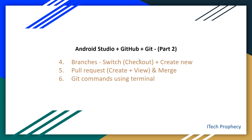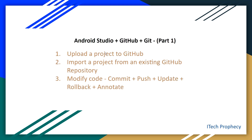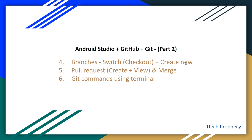Hello guys, I'm back with the second part of the video on how to use Git and GitHub in Android Studio. Before you watch this video, make sure you went through the first part — the link is in the description below. In the first part, we uploaded a project to GitHub, imported a project from an existing GitHub repository, then modified the code and did commit, push, update, rollback, and annotate all directly from Android Studio. In this video, we will switch and create new branches, then do pull request and merge, and finally use Git commands using the terminal, all directly from Android Studio.